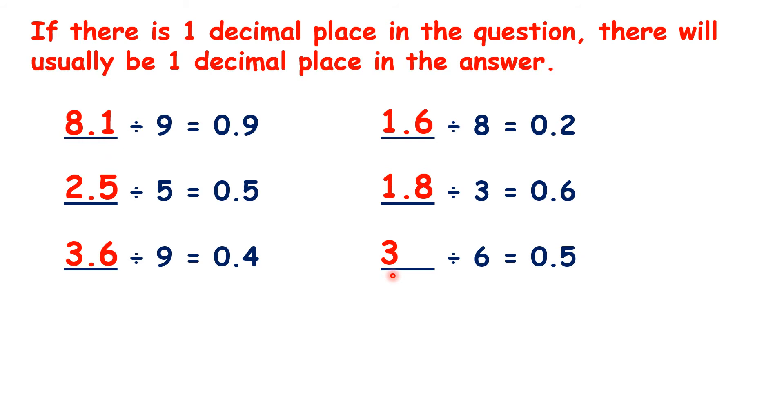So here, we're dividing a whole number, but we still get a decimal as our answer. And that's always what happens when doing the division would give you a remainder. So here, doing the division would give you 0 remainder 3.